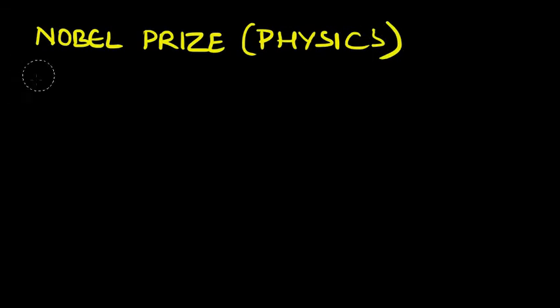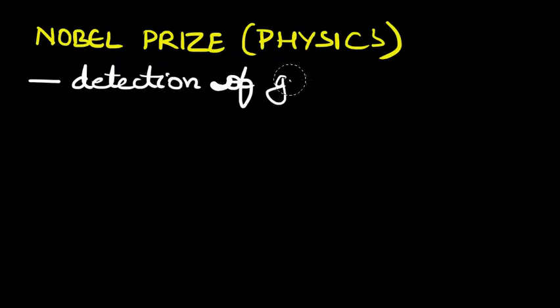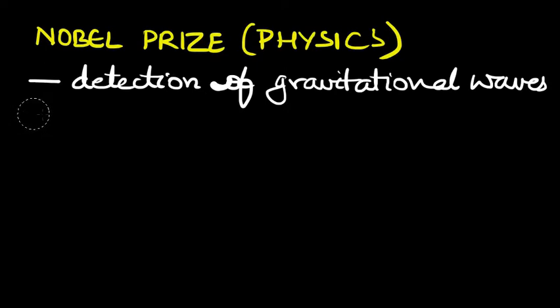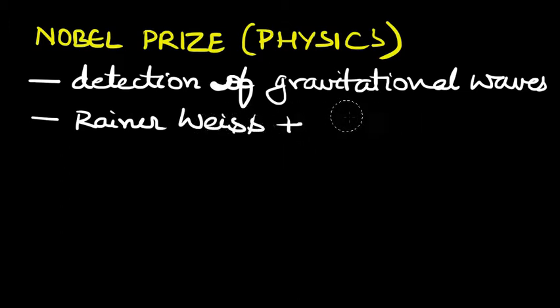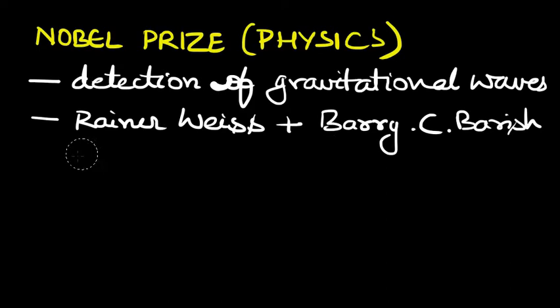This year's Nobel Prize for Physics was given for the detection of gravitational waves. This prize was given to three people: Rainer Weiss, Barry C. Barish, and Kip S. Thorne.